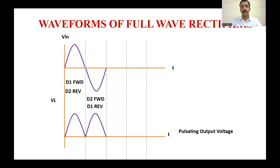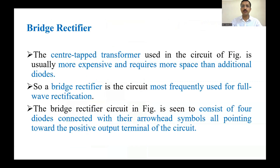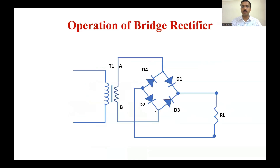In the negative half cycle, D2 is forward biased and D1 is reverse biased. In the case of a bridge rectifier — one of the applications of rectification — you can see that it has four diodes connected with arrowhead symbols pointing towards the positive output terminal.